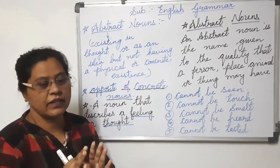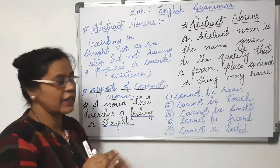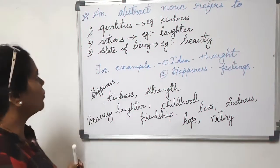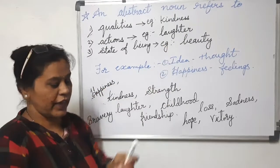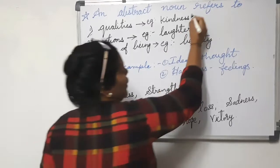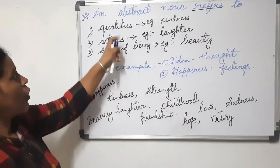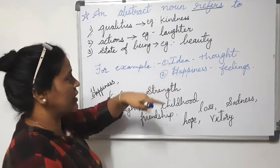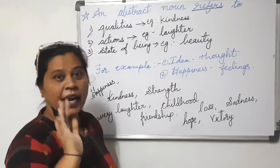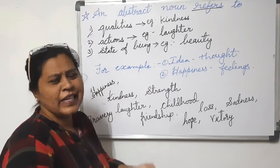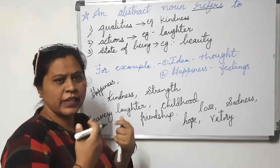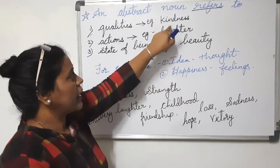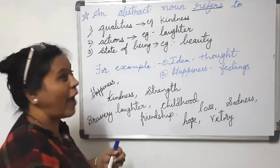Abstract nouns are feelings and thoughts. With more examples, you will be able to understand them more clearly. An abstract noun refers to qualities — for example, kindness. Kindness is a quality which cannot be seen, cannot be felt, and cannot be touched. Kindness is an abstract noun.